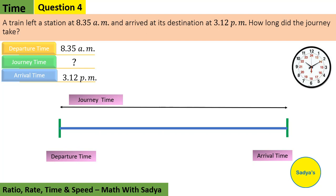A train left a station at 8:35 a.m. means that departure time is 8:35 a.m., and arrived at its destination at 3:12 p.m. means that is the arrival time. How long did the journey take? We have to find the journey time.